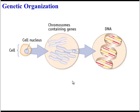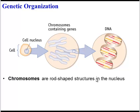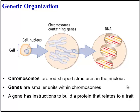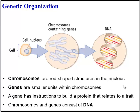Let's start with a little background information before we dive in. Remember that DNA is organized in a particular way. Within a cell, there is the nucleus, and within this organelle there are chromosomes — rod-shaped bodies. In this picture they look like Xs because the chromosomes have doubled. Within a chromosome are smaller units called genes, and then genes are made up of the double helix DNA that we're familiar with. Remember that a gene has the instructions to build a protein, and that protein relates to a trait.